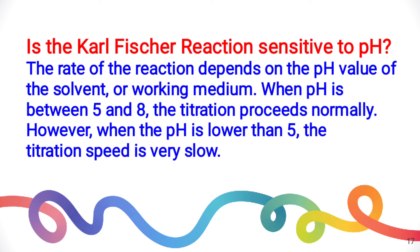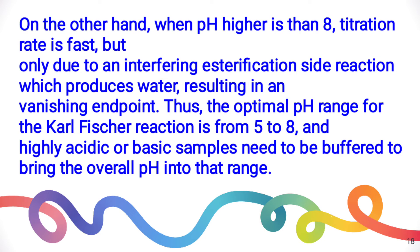Is the Karl Fischer reaction sensitive to pH? Yes, it is sensitive to pH. The pH range must be between 5 to 8. If the pH is lower than 5, the titration speed becomes very slow. If the pH is higher than 8, the titration rate becomes fast due to an esterification side reaction, which produces water and results in a vanishing endpoint. So the optimum pH range for Karl Fischer reaction is 5 to 8, and highly acidic or basic samples need to be buffered to bring the overall pH into that range.